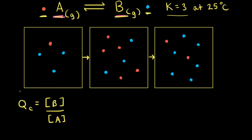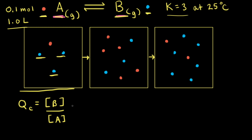Let's calculate the concentrations of B and A from our first particulate diagram. B is represented by the blue spheres, and there are three blue spheres. If each particle represents 0.1 moles of a substance and the volume of the container is 1 liter, since we have three particles, that would be 3 times 0.1, which is 0.3 moles, divided by a volume of 1 liter, giving 0.3 molar. So the concentration of B is 0.3 molar.